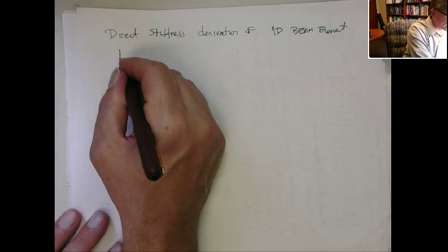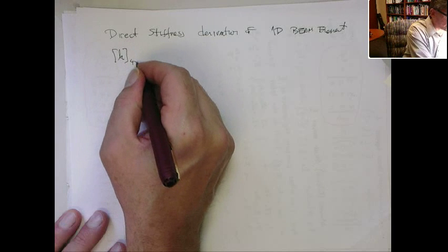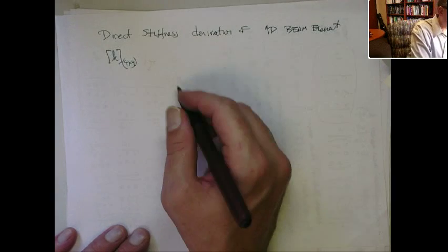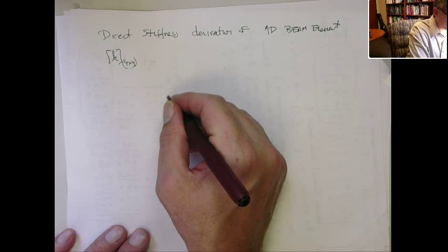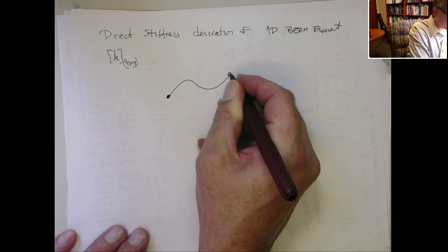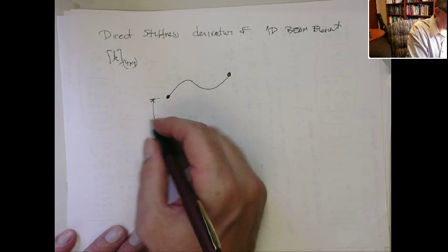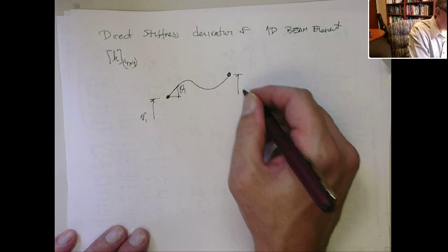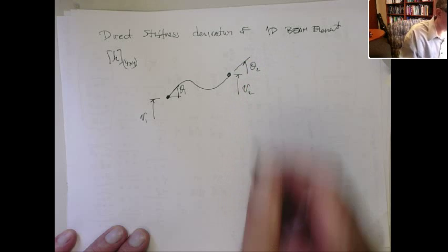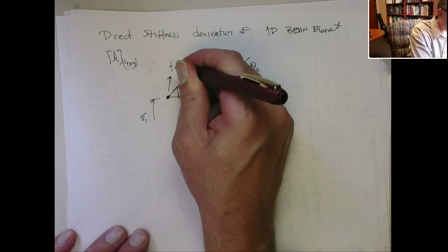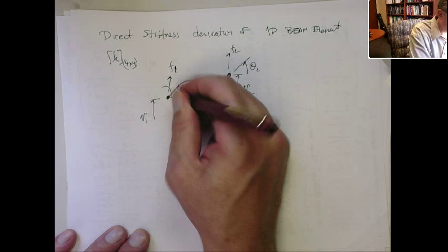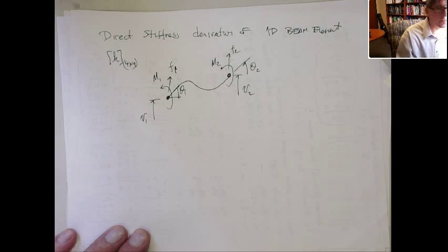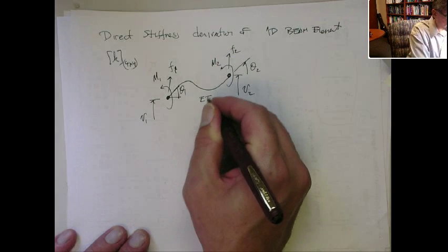We're going to get the 4 by 4 K matrix. This is what we started - well, I actually didn't start in class, I just kind of presented it. But here we're talking about a beam element that can deflect as follows. It has two degrees of freedom per node: a V1 and a theta1, and then a lateral displacement at node 2, and also a rotation at node 2. You have a force at node 1, an external force at node 2, and then also a moment at node 1, and a moment at node 2.